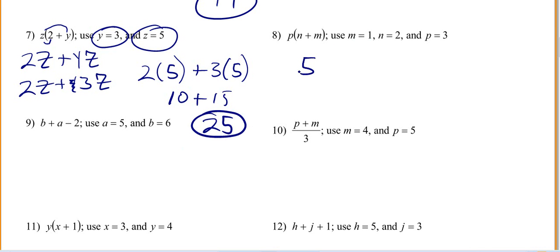Or if you wanted, you could have said 5 times, in parentheses, 2 plus 3. Where did I get this 5 from? Right here—Z. I know Z is 5, and I know Y is 3. So 2 plus 3 is 5. You still got 25.